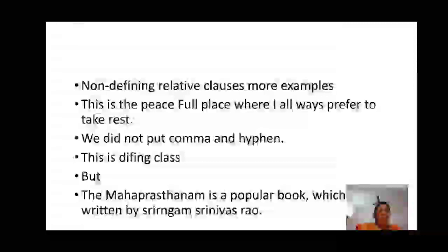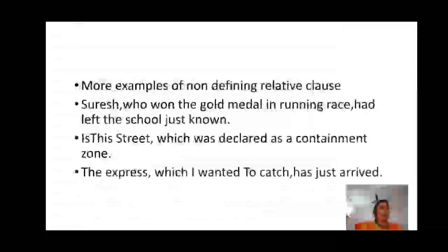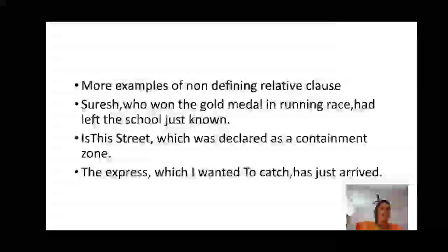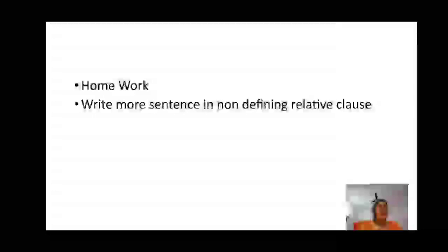But the Mahaprasthanam is a popular book which was written by Sri Rangam Srinivas. In this sentence, we put a comma — so this is called a non-defining relative clause. More examples: Suresh, who won the gold medal in running race, had left the school just now. Is this the street which was declared as a containment zone? The express which I wanted to catch has just arrived. These are non-defining clauses.